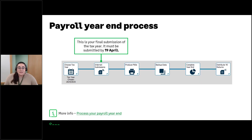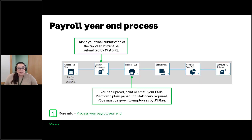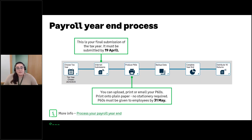After this, step three is to produce your P60s. These must be distributed to your employees by the 31st of May, and there are a few different ways you can produce these P60s in Sage 50 Payroll, so I'll give you a bit more information on each of those options very shortly.